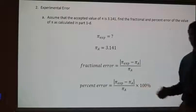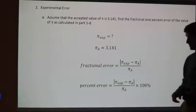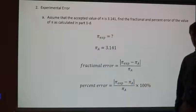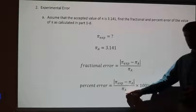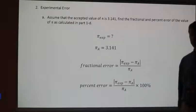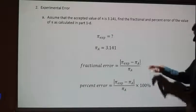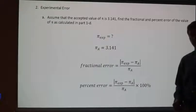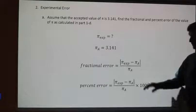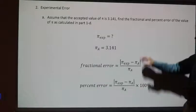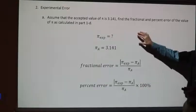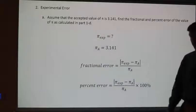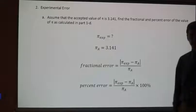Percent error: take the experimental value minus the accepted value, take the absolute value, divide by the accepted, then multiply by 100%. For instance, if I had a fractional error of 0.10, multiplying by 100% gives a 10% percent error. Take your previous measurement of pi from Part 1D and find the fractional and percentage error.